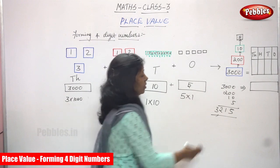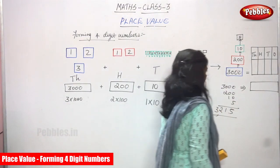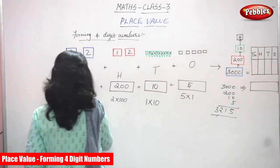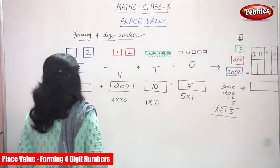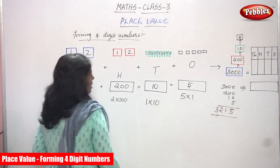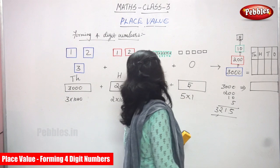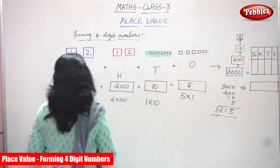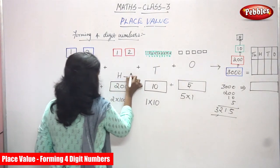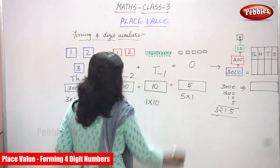You've got the four-digit number. It stands for: thousands — three thousand; hundreds — two hundreds; tens — only one ten; ones — five ones. That is what you have to write: three thousands, two hundreds, one ten, and five ones.